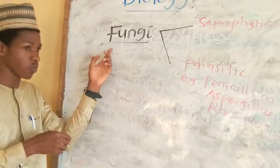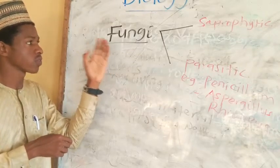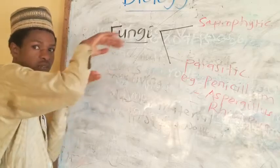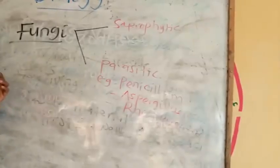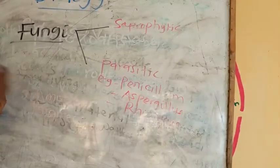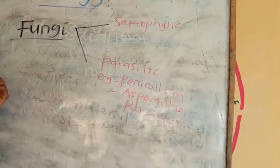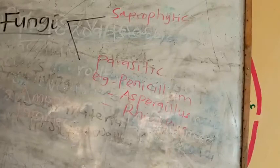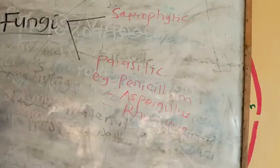The next type of microorganism is fungi. Fungi are divided into two: saprophytic ones, those that feed on dead bodies, and parasitic ones, those that live inside a living body and cause disease. For example, we have Penicillium, we have Aspergillus, and Cryptococcus, which affects the brain.